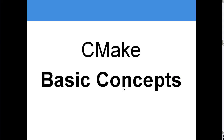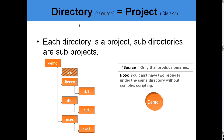CMake basic concepts: a directory is equal to a project. Each directory is a project, and subdirectories are subprojects. On the left side, we can see a typical hierarchy of a project, where we have 'demo' as the root, our include files, our static libs, dynamic and shared libraries, and executables. Note that an include folder is not really a project, as it is not producing binaries.